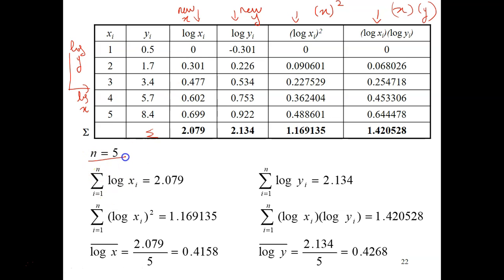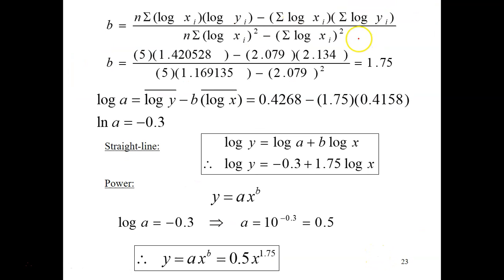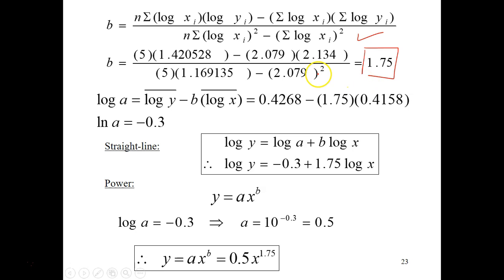You need to identify n, the total number of data — we have five data points. For the log x squared column, 0 squared is 0, 0.301 squared is 0.090601, and so on. Once you have all the summations, substitute all the values into the slope formula: n times summation of xy minus summation of x times summation of y, divided by n times summation of x squared minus summation of x squared.